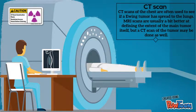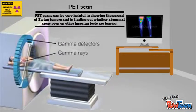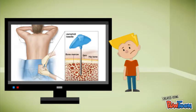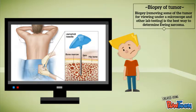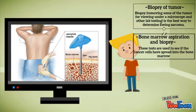CT scan, to see if a Ewing tumor has spread to the lungs. Bone scan, to see if the cancer has metastasized to bone in other parts of the body. Head scan, which can show the spread of Ewing tumors. And lastly, biopsy of tumor and bone marrow aspiration and biopsy.